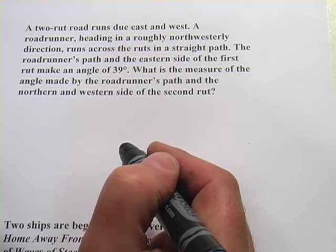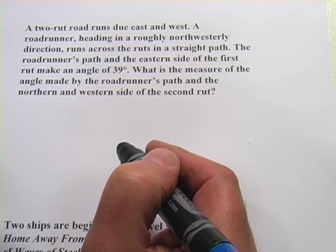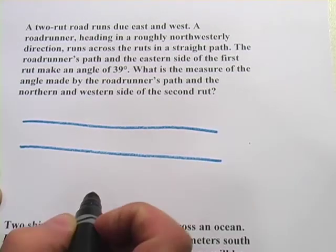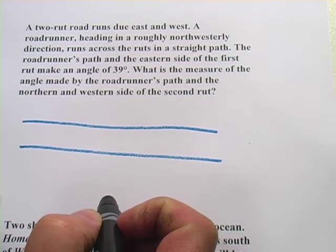It says a two-rut road runs due east and west. So here's a road, there's one of the ruts, there's the other rut. So we've got a couple of parallel lines to start with.